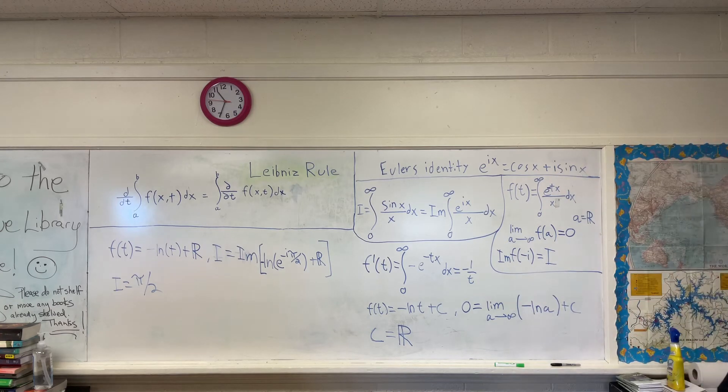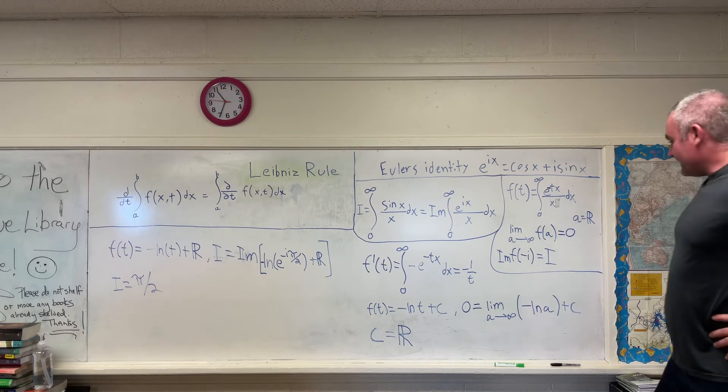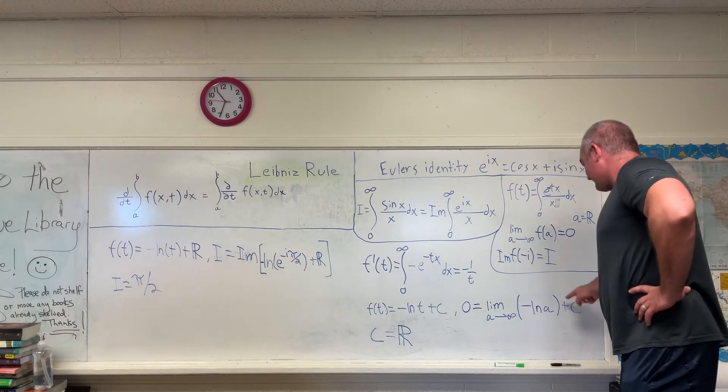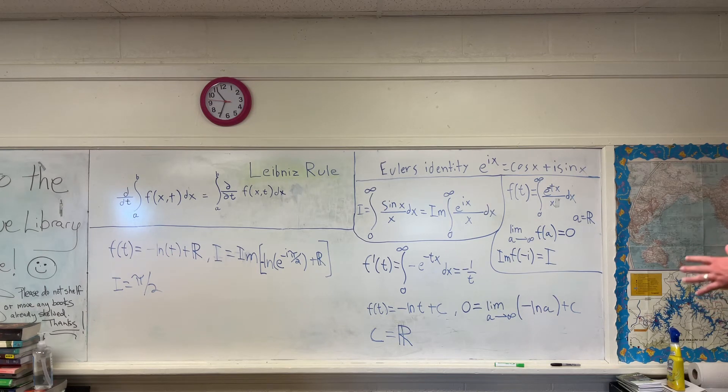So 0 is the limit, is equal to the limit as some value a approaches infinity of negative natural log a plus c. And we're going to make another note here that this constant right here will be a purely real number.